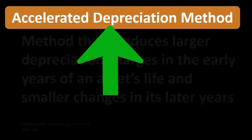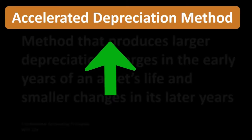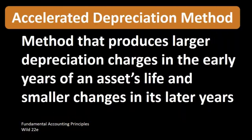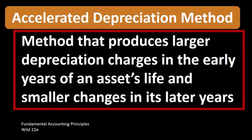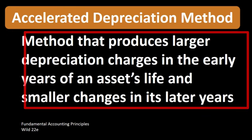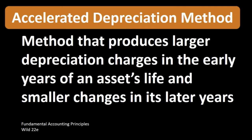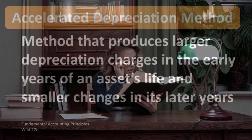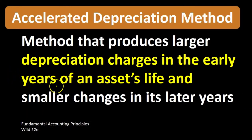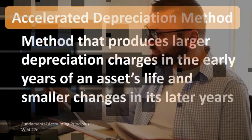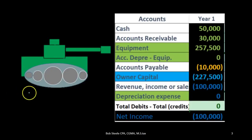We need a benchmark to compare the accelerated depreciation method to. The straight-line method is usually the benchmark we will compare other methods to, including accelerated depreciation. Therefore, when we say we have more depreciation in the early years of the asset's life, that is of course in comparison to the straight-line method.